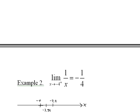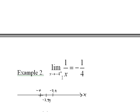Here's an example: the limit of 1 over x as x approaches negative 4 from the right side. Here's negative 4. I'm going to put in values closer and closer to negative 4 from the right. I don't care what happens at negative 4 itself. Putting in negative 3.9 and negative 3.99 — values larger than negative 4 but approaching it — this function gets closer and closer to negative one-fourth.